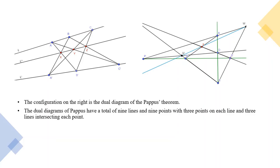You might be thinking: why can we use the Pappus theorem when it looks nothing like the standard diagram? Actually, both diagrams are the same. The reason is that projective geometry is not concerned about distances, angles, and parallelism — so it introduces duality, where we simply interchange a few lines and points. In our original diagram, we have a total of 9 lines and 9 points, with 3 points on each line and 3 lines intersecting each point. We have the same property in the configuration on the right. Therefore, the dual of the Pappus theorem is the same diagram, but not easily recognizable.